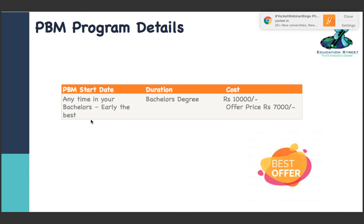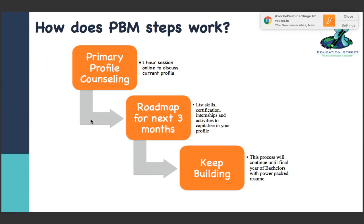All these benefits come at a very small price - 7,000 rupees only. Normally we price it at 10,000 but for all webinar attendees we are placing the price at only 7,000. It starts with a one-hour session with me - Ankita. I analyze your current profile and make a self-evaluation report for you, and provide a list of skills, certifications, internships, and all other activities to capitalize your profile. This roadmap is for the next three months, and then we have the same session again after three months - building continuously until your final year with a power-packed resume.